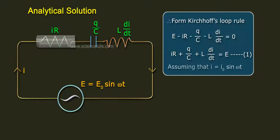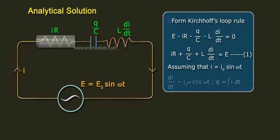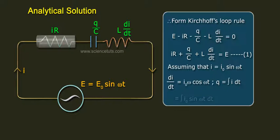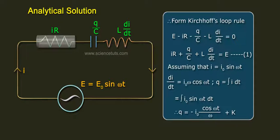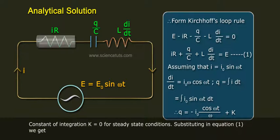Assuming that I = I0 sin(ωt), then dI/dt = I0·ω·cos(ωt). The charge Q equals the integration of I dt, which is the integration of I0 sin(ωt) dt. Therefore Q = −I0·cos(ωt)/ω + K, where K is the constant of integration.